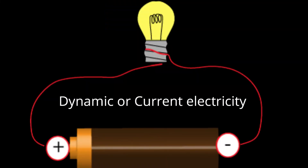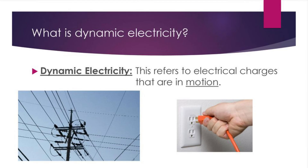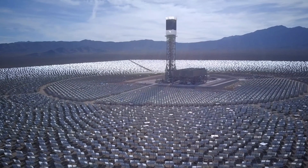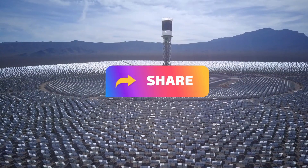Dynamic or current electricity occurs when electrons are moving through an electrical conductor. The flow of electrons is known as an electrical current. An electrical current flows when you connect one end of a battery to the other with a conductor, with the electrons flowing from the negative side of the battery to the positive side, much like water flows in a pipe.